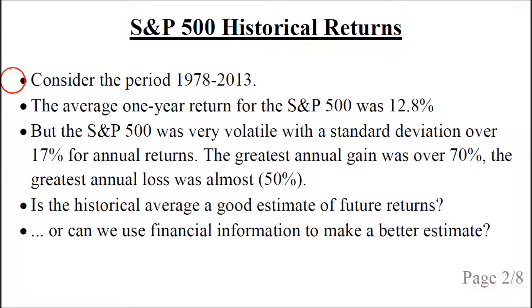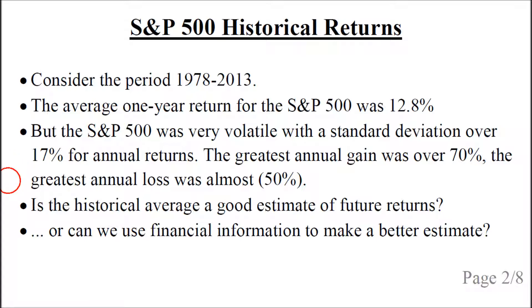Consider the period 1978 to 2013. The average one-year return for the S&P 500 was 12.8% in this period, but it was very volatile. The standard deviation was over 17% for annual returns, the greatest annual gain was over 70%, and the greatest annual loss was almost 50%. So the question is: if the historical average is a good estimate of future returns, or perhaps we can use some financial information to make better estimates.